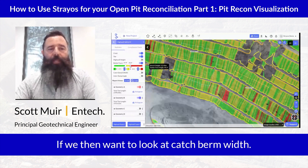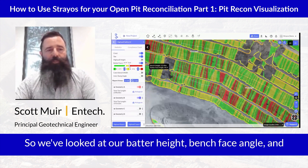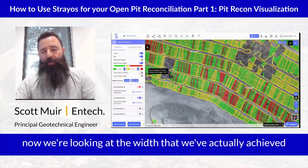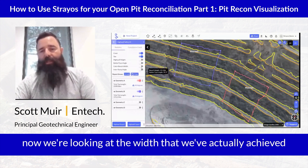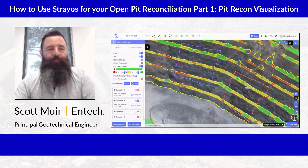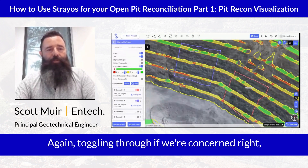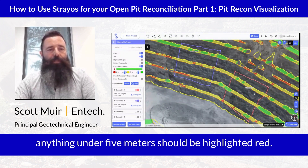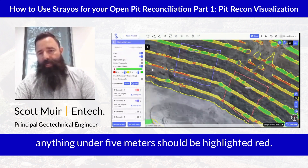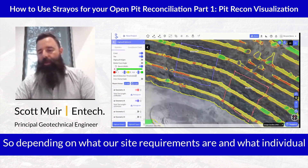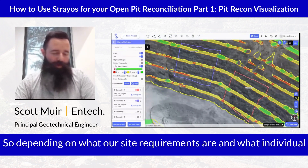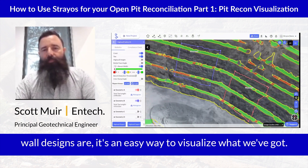If we then want to look at catch berm width — so we've looked at our batter height and bench face angle, and now we're looking at the width we've actually achieved on our catch berms. Toggling through, anything under 5 meters is highlighted red. Depending on what our site requirements are and what our individual wall designs are, it's an easy way to visualise what we've got.